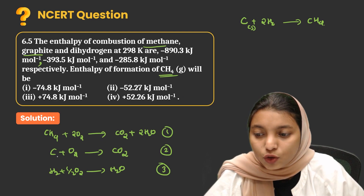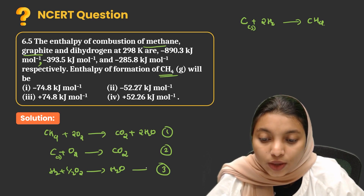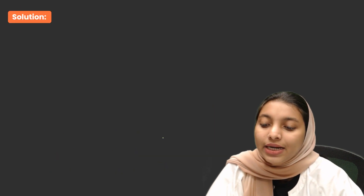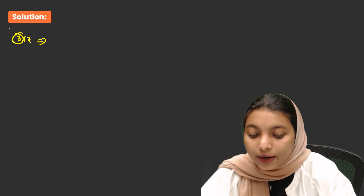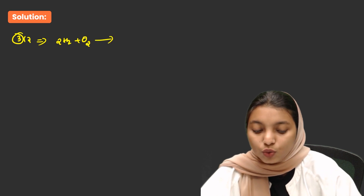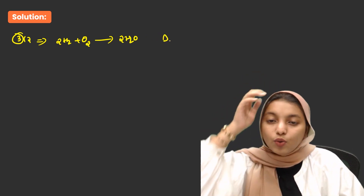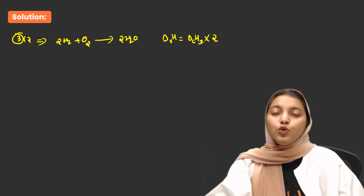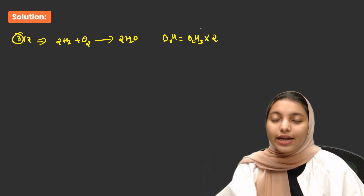We need carbon in the reactant side and 2H2. So we multiply equation 3 by 2: 2H2 + O2 → 2H2O, and the enthalpy gets doubled. We are doing this question based on Hess's rule.